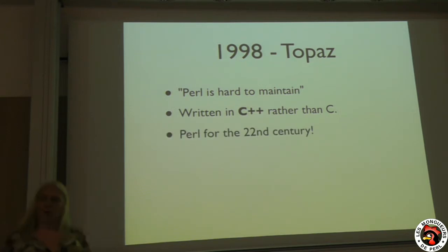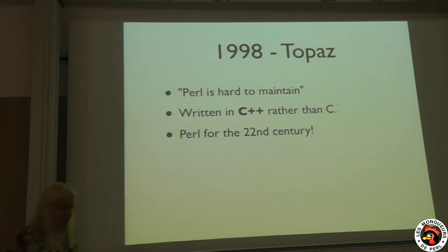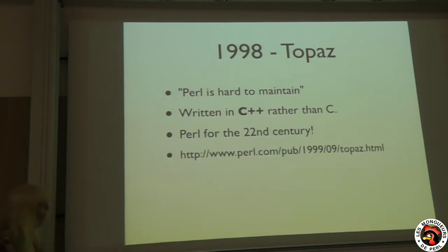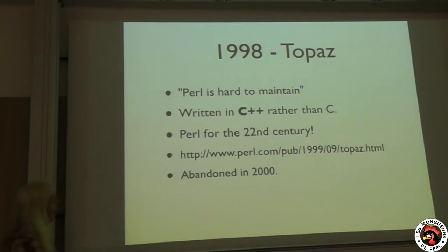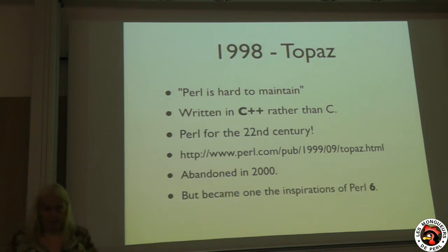But things developed very quickly internally. Already in 1998, Chip Salzenberg said, 'Perl is hard to maintain. I'm going to start something new, written in C++ or in C.' It was going to be Perl for the 22nd century. Yes, that's what he said — the 22nd century. So we're actually doing quite well with Perl 6 now.